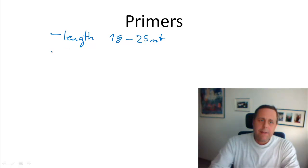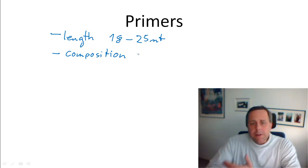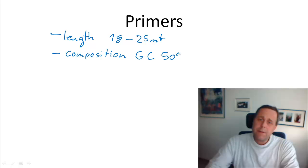However, it's not just the length, it's also the composition that makes a difference. The composition of the primers should contain an even percentage of GC. So the amount of G's and C's in your primers should be something like 50% or maybe 60%, but not too much more, not too much less.